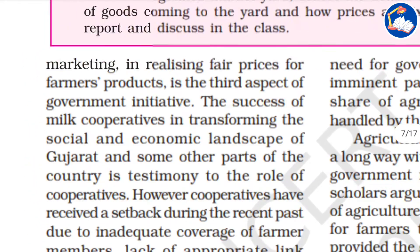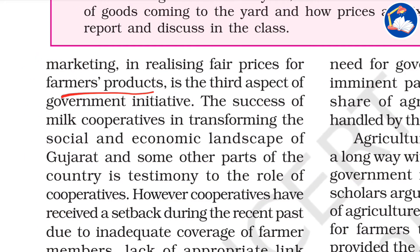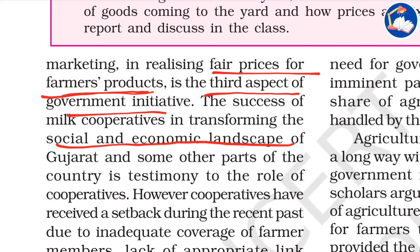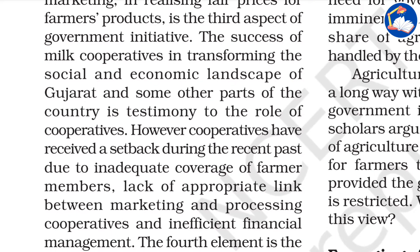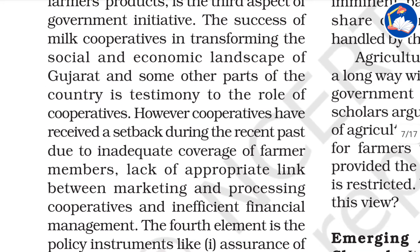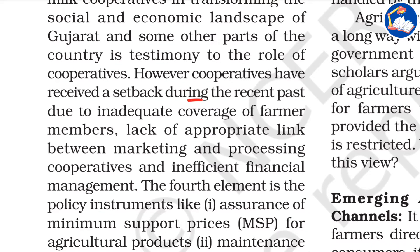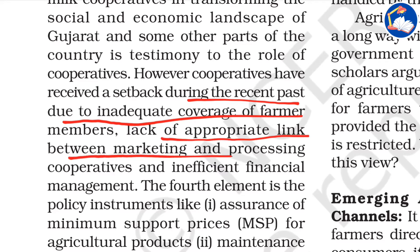The third aspect is cooperative marketing — realizing fair prices for farmers' products. The success of milk cooperatives in transforming the social and economic landscape of Gujarat is a testimony to the role of cooperatives. Examples include Amul and Milma in Kerala. However, cooperatives have received a setback in recent years due to inadequate coverage of farmer members, lack of appropriate links between marketing and processing cooperatives, and inefficient financial management.